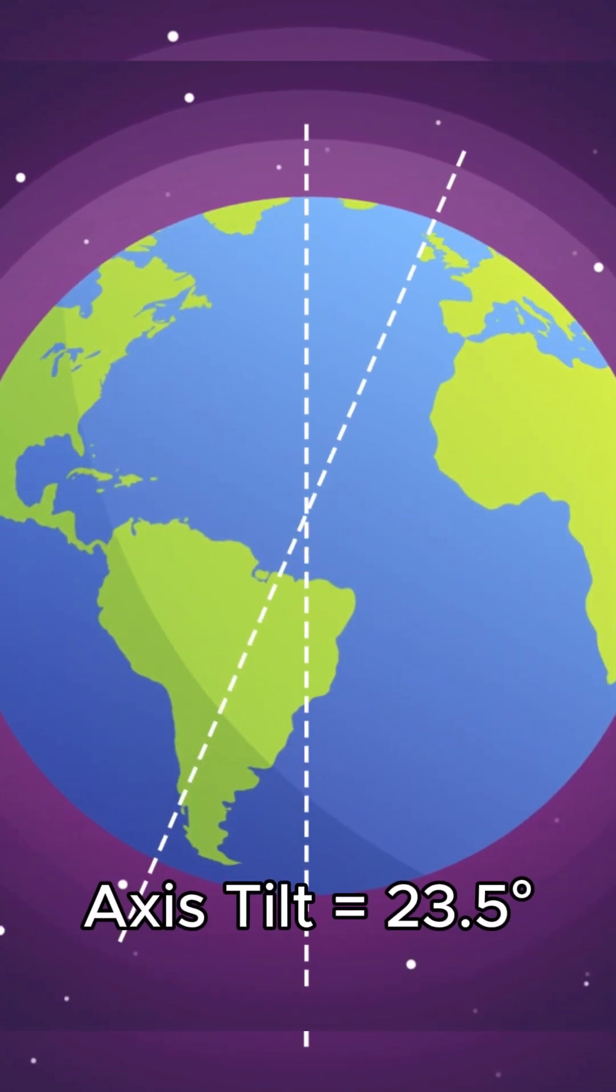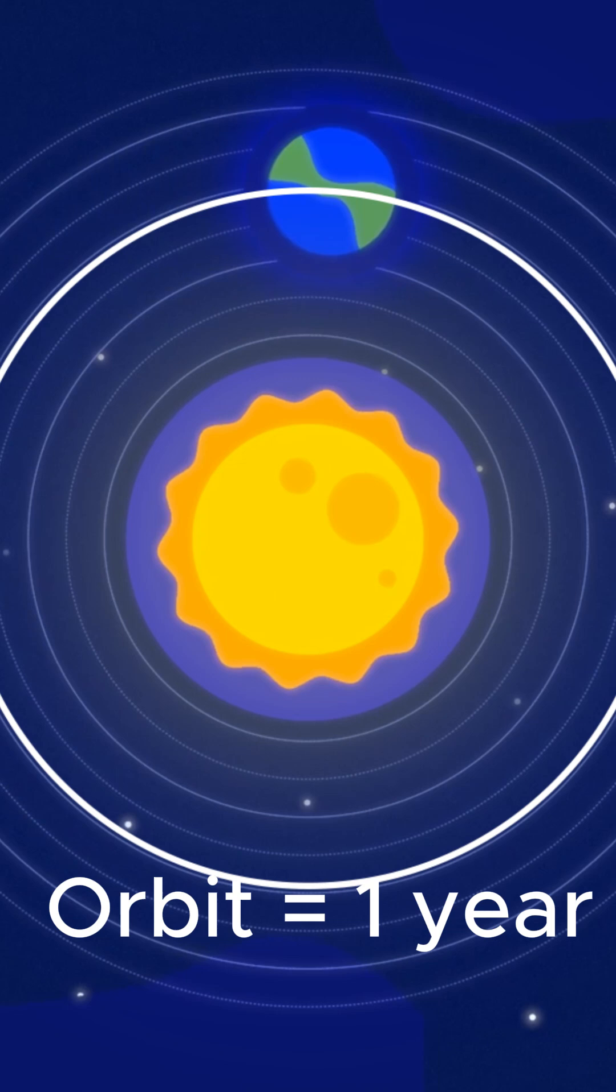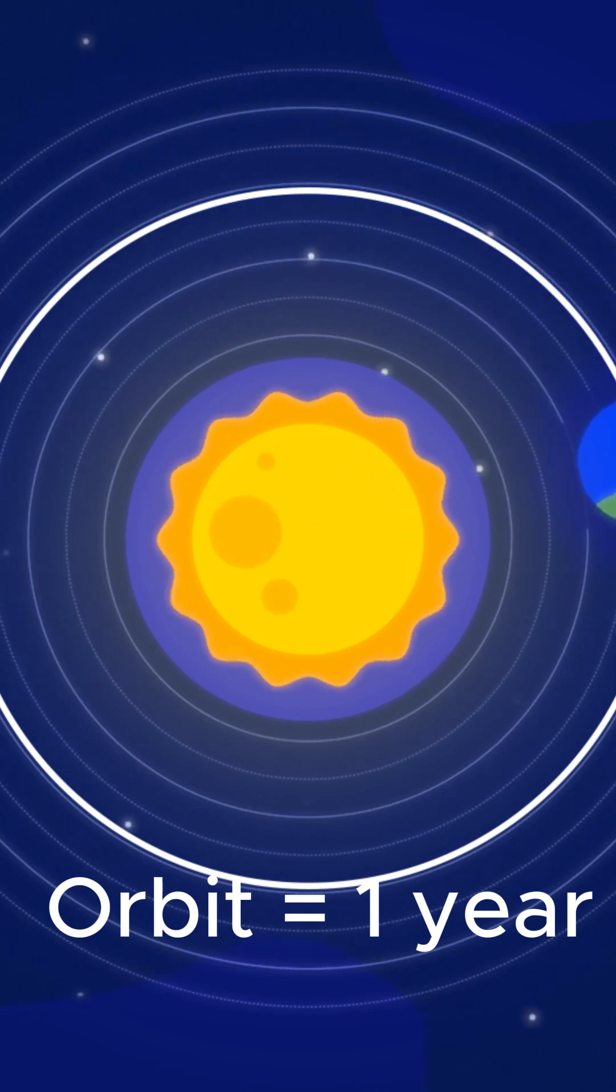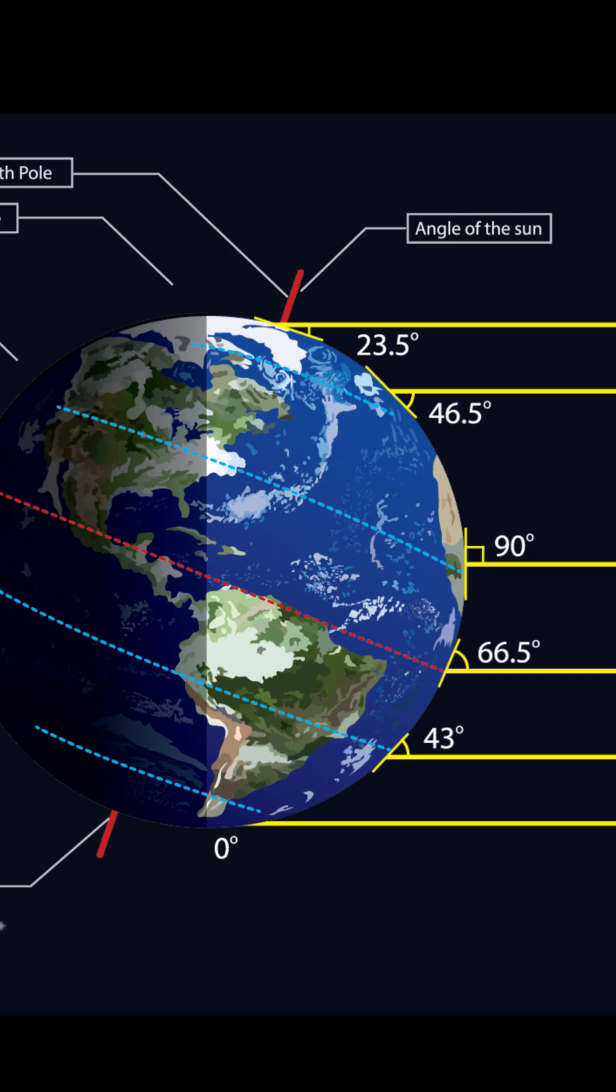Earth is tilted at 23.5 degrees, and as it orbits the sun, different parts of the planet get more or less sunlight. This is what causes seasons to change.